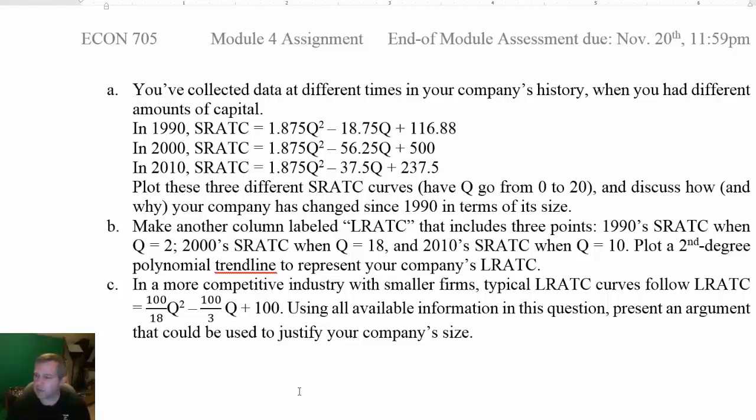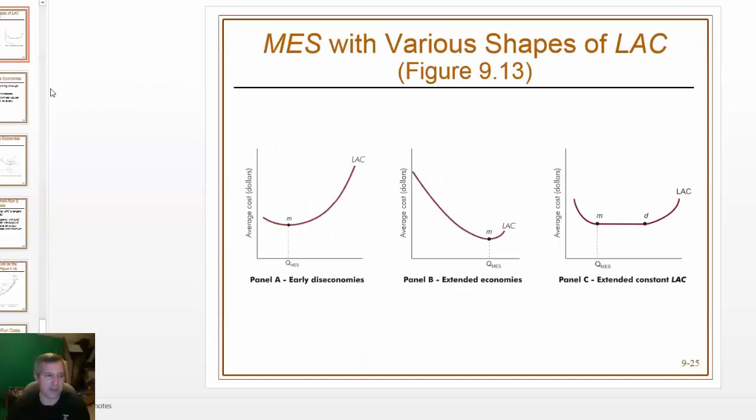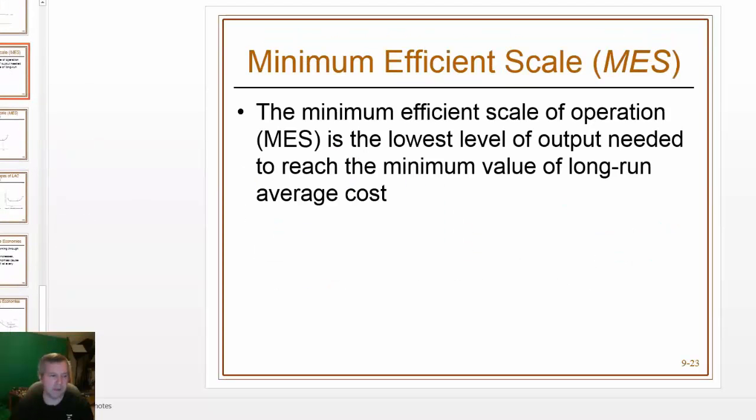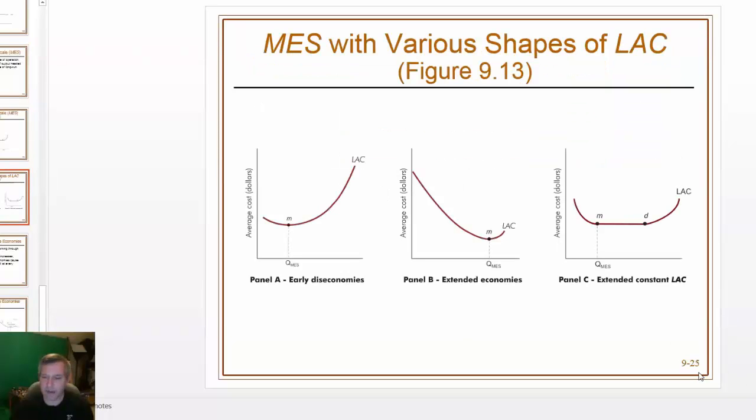And if I just go back to the slides again, which I don't think is going to be giving too much away, there's this discussion about the minimum efficient scale. The concept of minimum efficient scale is not necessarily what I'm interested in now. But here on slide 25, you can see a couple different pictures of what the long run average cost curve looks like for different hypothetical firms.